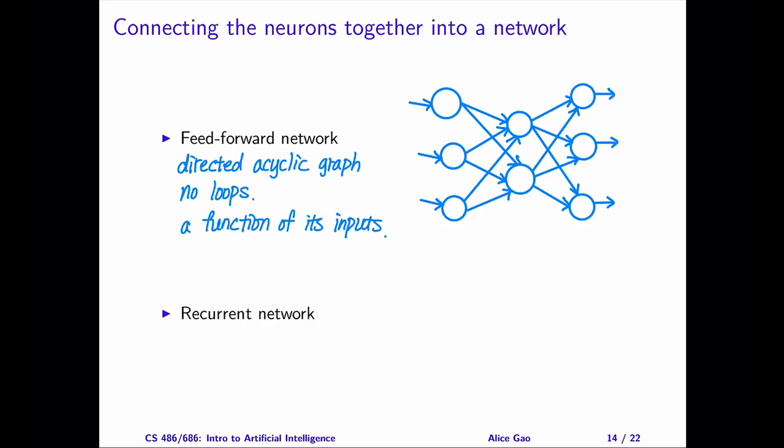I've drawn a two-layer feedforward network. It's a directed acyclic graph. The key property is that the network has no loops. Think about the numbers flowing through the network. They come in as input values from the left, get transformed through the edges and the nodes, and finally go out as output values on the right. These values only flow in one direction. They never go backwards.